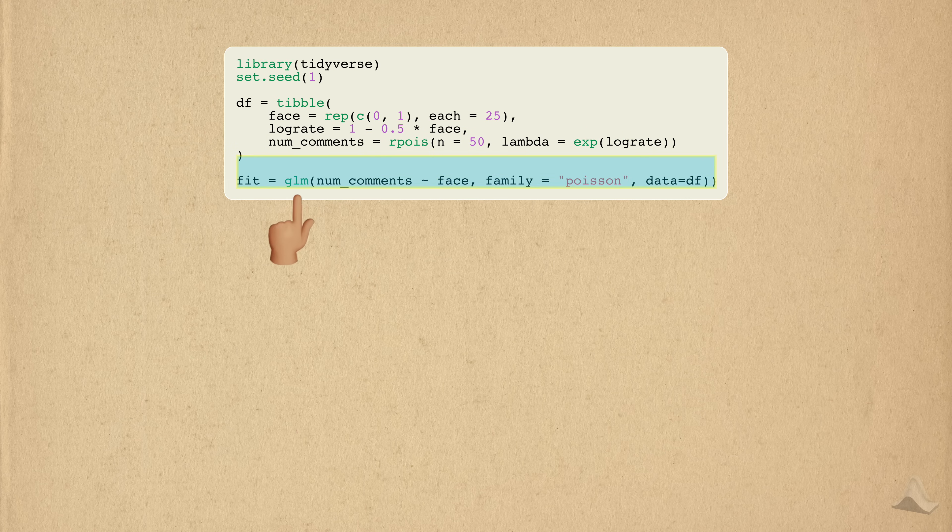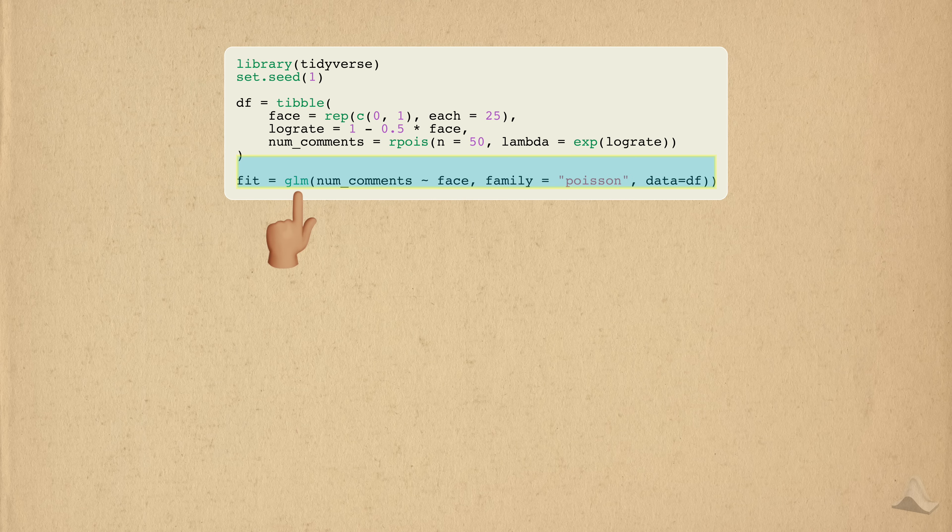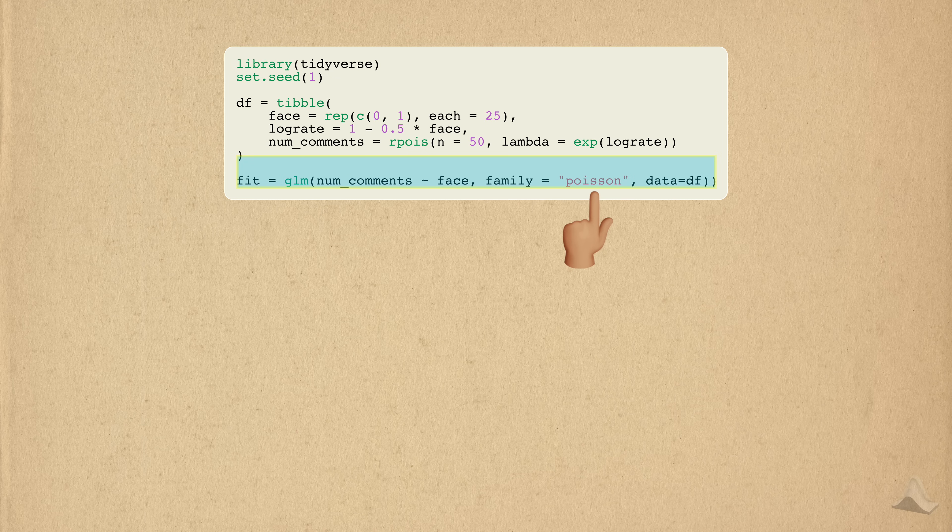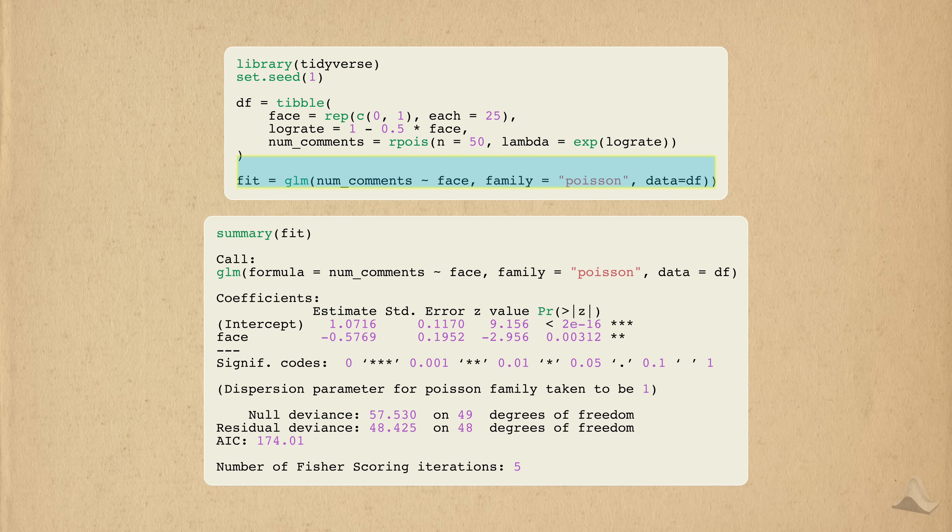From there, you can use the GLM function to create the GLM and estimate the model coefficients, just like we did with logistic regression. Since we're modeling the outcome with the Poisson distribution, you need to specify Poisson in the family argument instead. Running this allows R to estimate the regression parameters through maximum likelihood, and we can look at a summary for it with the summary function. You can see here that the estimated parameters are pretty close to the true values.